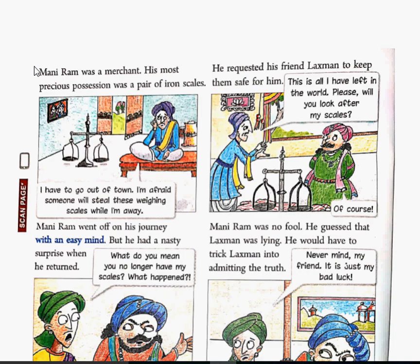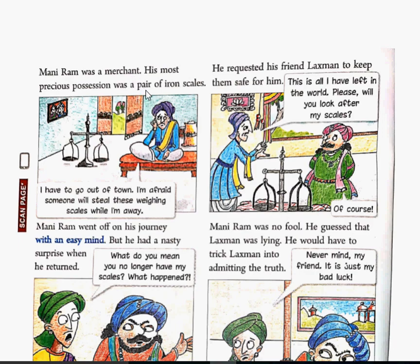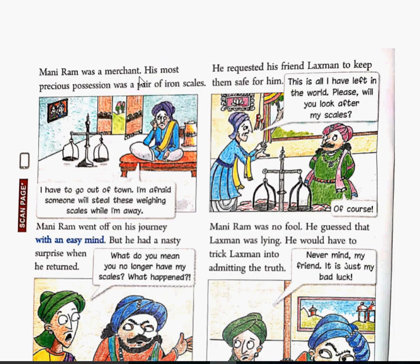Let's start the story. The main character of the story is Mani Ram. Mani Ram ek merchant tha, businessman tha. Aur uske sabse precious possession thi - matlab wo saman jiske aap malik ho. Mani Ram ka precious saman tha a pair of iron scales - tadazu. He had to go out of town and was afraid someone would steal this weighing scale while he was away.